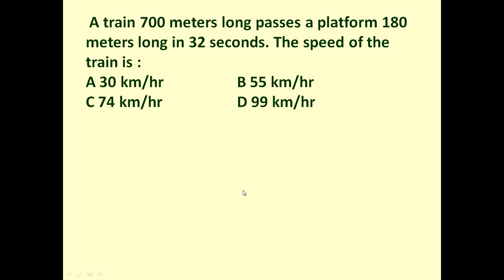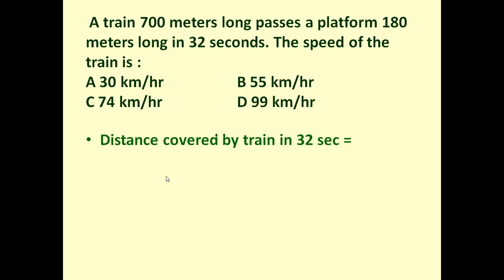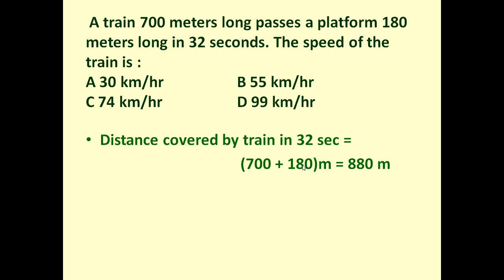First, let us determine the distance covered by the train in 32 seconds. The distance covered by the train in 32 seconds is equal to 700 plus 180, because only then will the whole length of the train cross the platform. So 700 plus 180 meters equals 880 meters. This is the total distance traveled by the train.